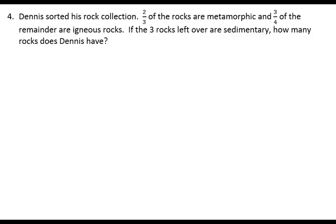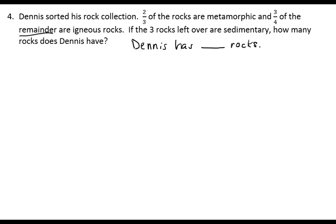This question says: Dennis sorted his rock collection. Two-thirds of the rocks are metamorphic, and three-fourths of the remainder are igneous rocks. If the three rocks left over are sedimentary, how many rocks does Dennis have? This is a different sort of question because we don't know how many rocks we have at the beginning, so we're going to have to work backwards. I'll start by writing my answer statement: Dennis has blank rocks. Since we don't know how many rocks he has at the start, we're going to start with the remainder. So I have a piece representing the remainder.